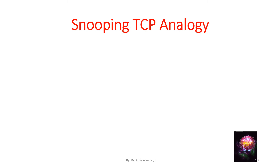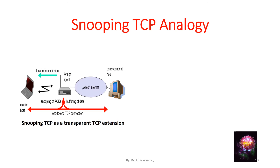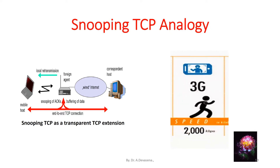In snooping TCP, a single end-to-end TCP connection is created between the mobile host and the correspondent host. The function of snooping TCP is analogous to 3G wireless networks. The 3G network offers better speeds compared to 1G and 2G, with a speed of 2000 kbps. Similarly, snooping TCP is an improvement over indirect TCP in classical TCP enhancements.